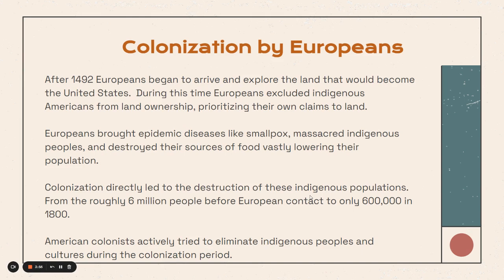After 1492, Europeans began to arrive and explore the land that would become the United States. During this time, Europeans excluded Indigenous Americans from land ownership, prioritizing their own claims to land — basically, they took the land of the people that were already there. Europeans brought epidemic diseases like smallpox, massacred Indigenous people, and destroyed their sources of food, which vastly lowered their population. Colonization directly led to the destruction of these Indigenous populations, from roughly 6 million people before European contact to only 600,000 in 1800 — a loss of over 5 million people. American colonists actively and deliberately tried to eliminate Indigenous people and cultures during this colonization period.